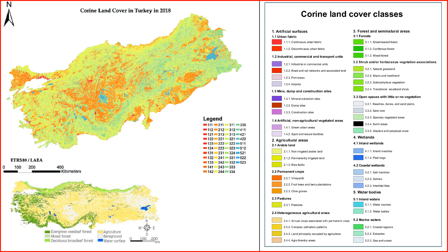7. Cultural and historical sites. Turkey is rich in cultural and historical heritage, with many archaeological sites, ancient cities, and monuments. Land is used to preserve and showcase these cultural assets. 8. Tourism. Tourism is a vital sector in Turkey, and land is used for hotels, resorts, and recreational facilities to cater to both domestic and international tourists.